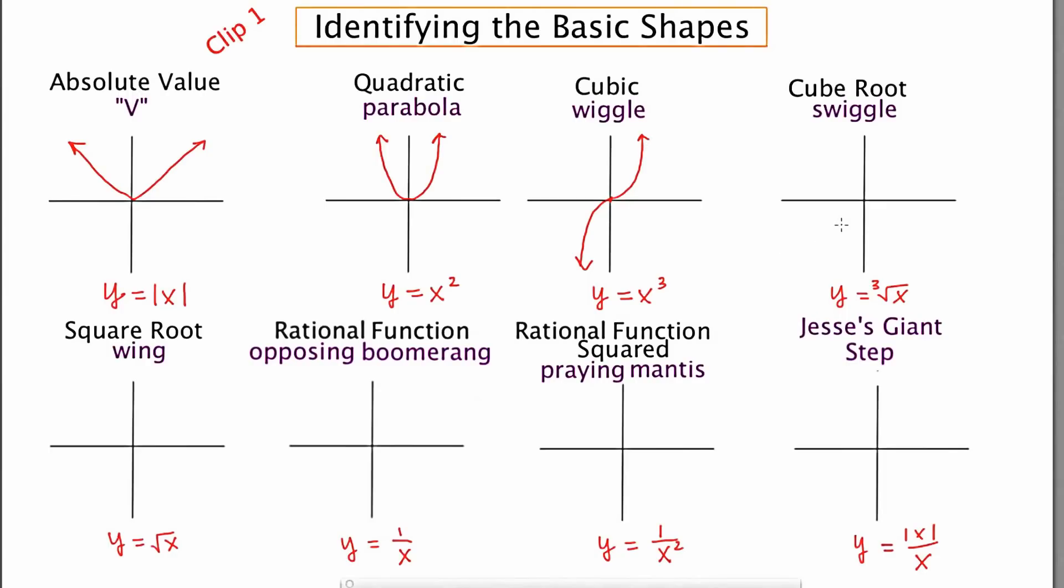The cube root graph looks like what we call a swiggle, the s standing for sideways. So it looks like a wiggle that's been turned on its side. So it kind of opens out to the right, and then down and out to the left. So that's why we call it a swiggle, a sideways wiggle.